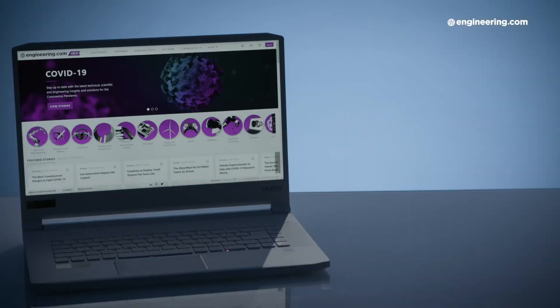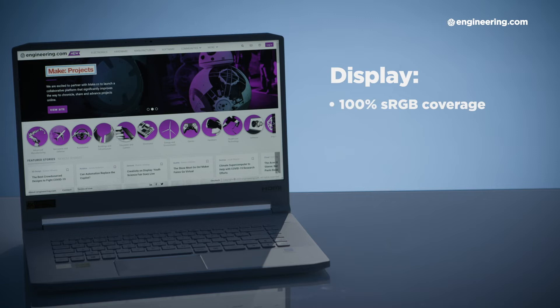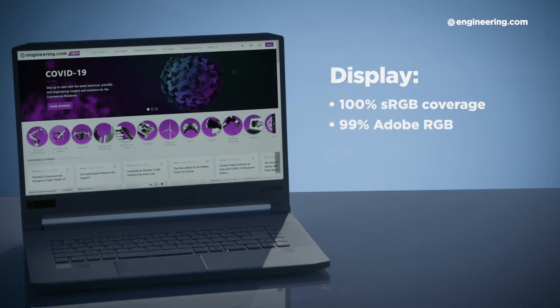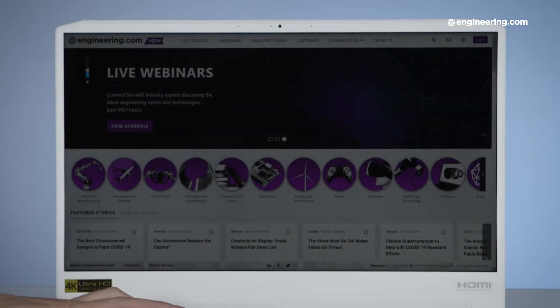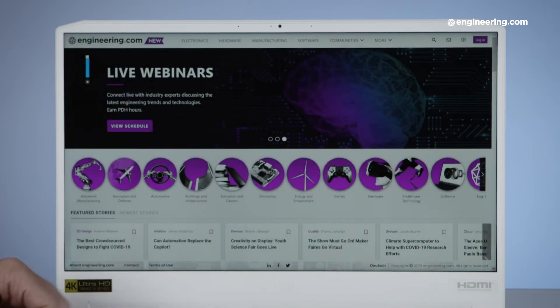The ConceptD 7 Pro has a 4K display, which looks great to my eye. And we did a bunch of tests with our colorimeter. We found that it has 100% sRGB coverage, 99% Adobe RGB, and brightness of about 267 nits. Acer advertises this computer as having 400 nits of brightness, so it was a little disappointing to see it so far below. Nonetheless, it gets bright. And if you're not out in direct sunlight, it's plenty bright for sitting at your desk and doing some work.